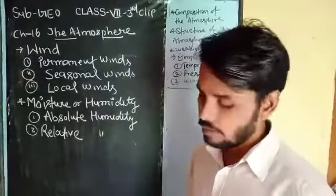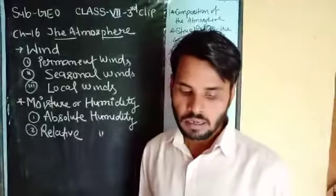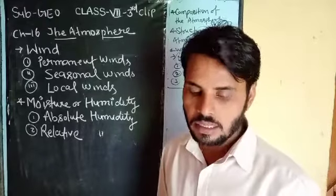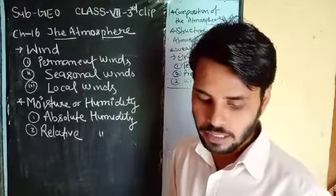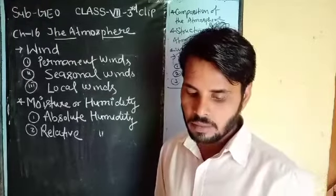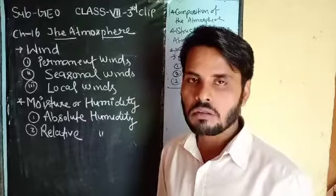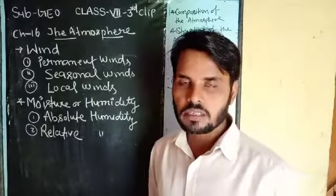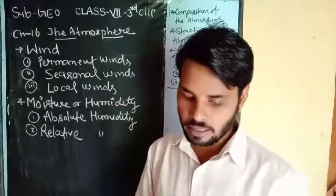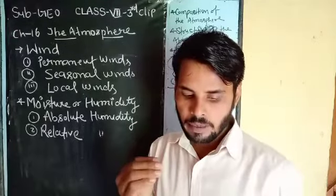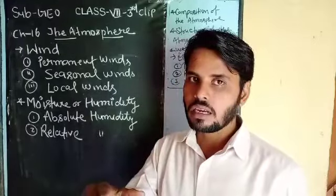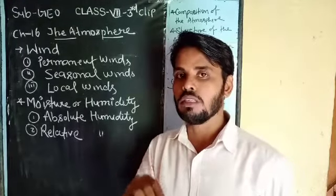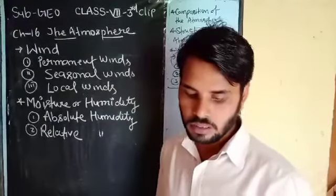इसी तरह से relative humidity एक ratio है। It refers to the ratio between the amount of water in a certain volume of air and the maximum amount that might exist without condensation at a certain temperature। यह ratio है हवा में पानी की मात्रा और उसकी maximum capacity का — उसे relative humidity कहा जाता है।